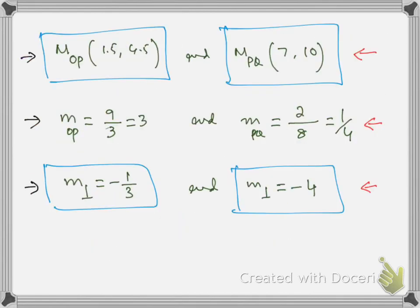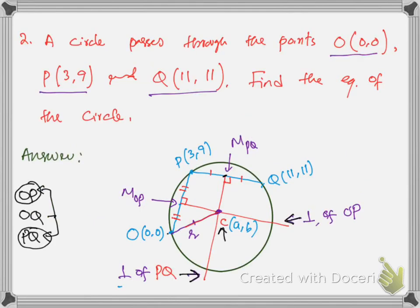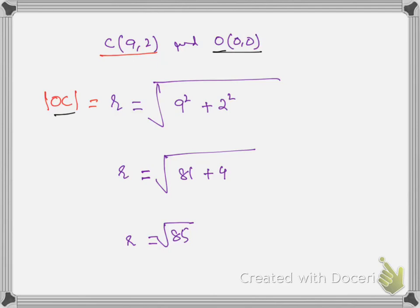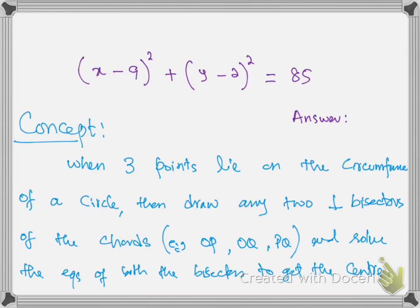For radius you have three options — you can either find distance OC, distance CQ, or distance CP. I worked for CO and found OC, so that is the radius. Now for the equation of the circle, substitute everything into the standard equation of circle. Here is the final equation of the circle which passes through points O, P, and Q. This is the concept: when three points lie on the circumference of a circle, draw any two perpendicular bisectors of the chords — chord OP, chord OQ, chord PQ — and solve the equations of the bisectors to get the center.